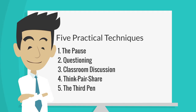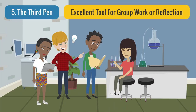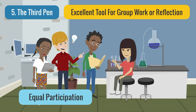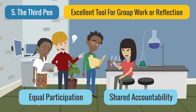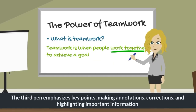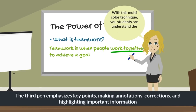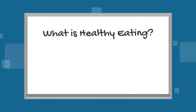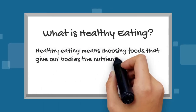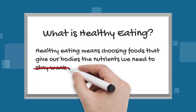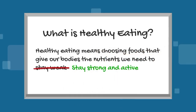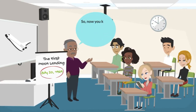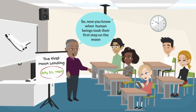Finally, let's explore the third pen — an excellent tool for group work or reflection during the pause. It encourages equal participation and shared accountability in student tasks. The third pen is a versatile tool for emphasizing key points, making annotations, corrections, and highlighting important information. It is normally a different color from the other pens being used — for example, you might write in black, underline and circle in red, and correct in green. How you manage your system will be unique to you and your students.